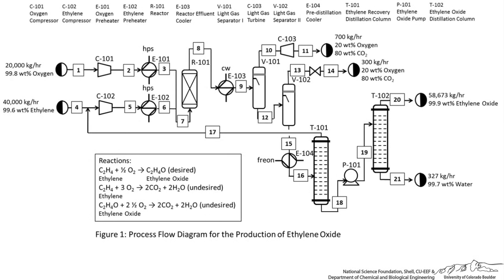In this lecture, we'll look more closely at the letter and number representations for equipment. Let's go back to our original process flow diagram for the production of ethylene oxide.